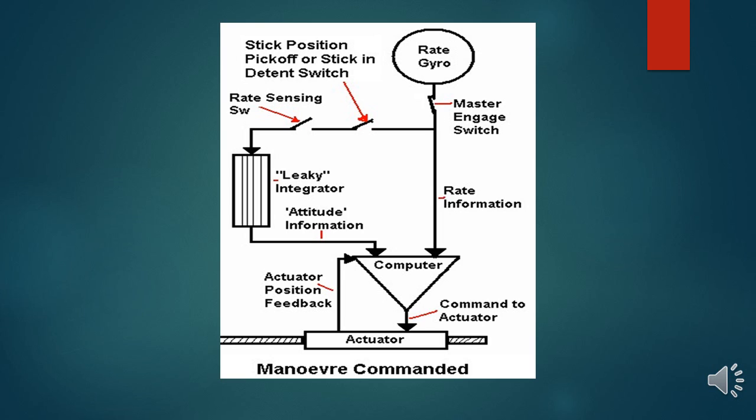The leaky integrator produces an attitude that is different from the attitude that existed 20 to 30 seconds previously. Both signals that are produced by the rate gyro and leaky integrator are sent to the computer which provides correction signal to the actuator to move the main rotor, thus returning the helicopter to the datum attitude.